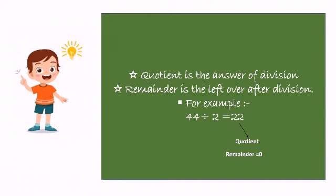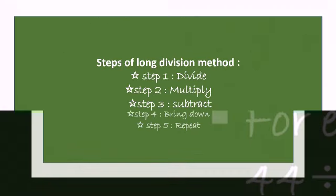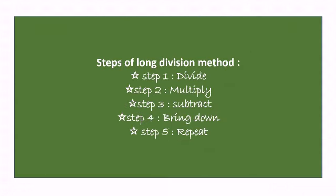For example, 42 divided by 2 gives a quotient of 22, and nothing is left over, so the remainder is 0.